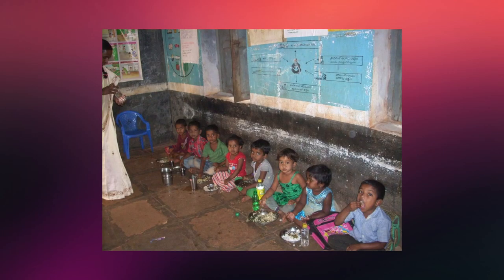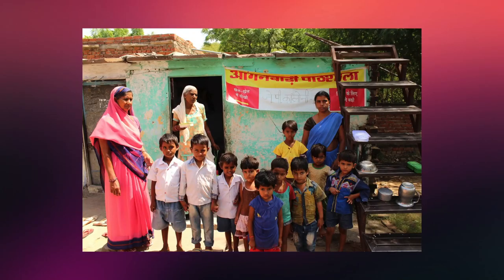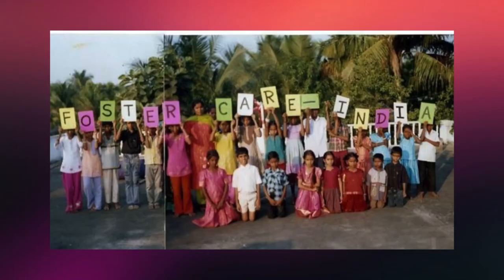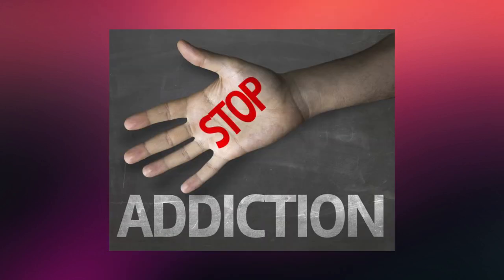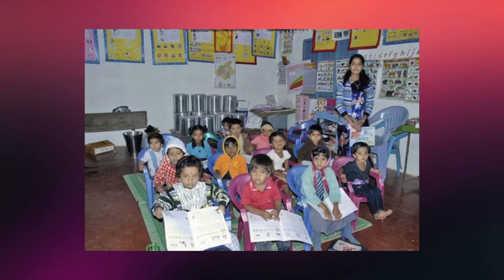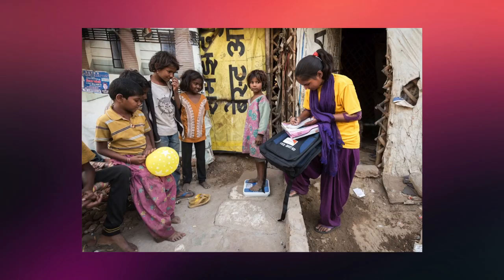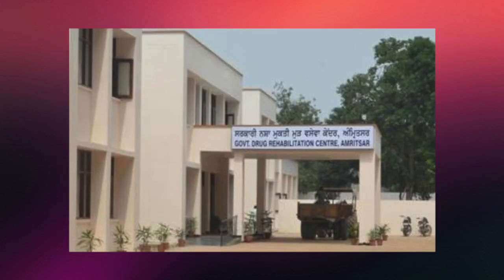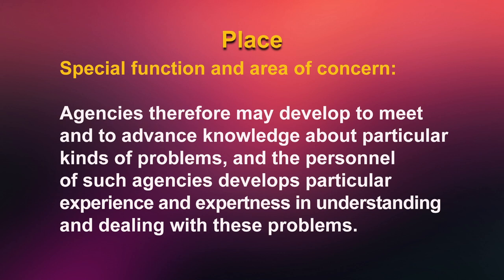There are many multi-purpose child welfare agencies, but also many agencies specialized in certain aspects of child welfare such as adoption, foster homes, learning disability, and addiction. Just as it is impossible for any one person to know everything about meeting personal and social needs, so it is impossible for any one agency to provide all kinds of welfare aid. Agencies therefore develop to meet and advance knowledge about particular kinds of problems.